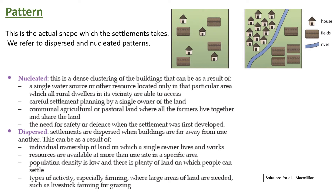This next slide, giving credit to Solutions for All from Macmillan — the diagram and text are taken from that textbook. Here we're looking at the actual pattern that settlement takes. We've either got a nucleated pattern or a dispersed pattern. Nucleated is also often called clustered, and dispersed is often referred to as isolated. Nucleated means the dense clustering of buildings, as we see in this diagram where all the buildings are together along the river, and rural dwellers have access to the same water.